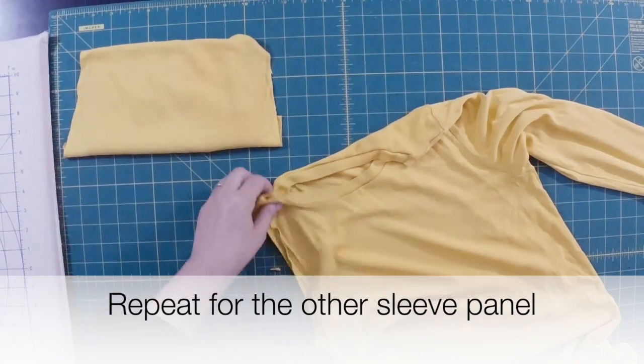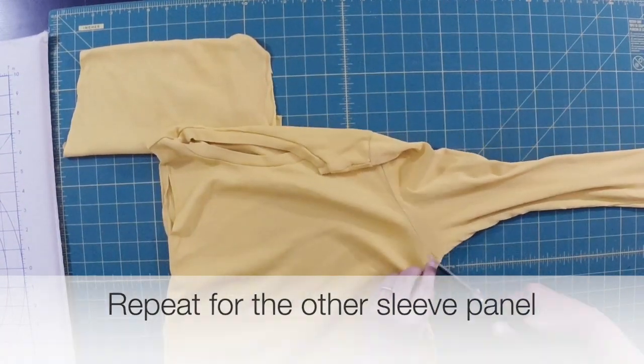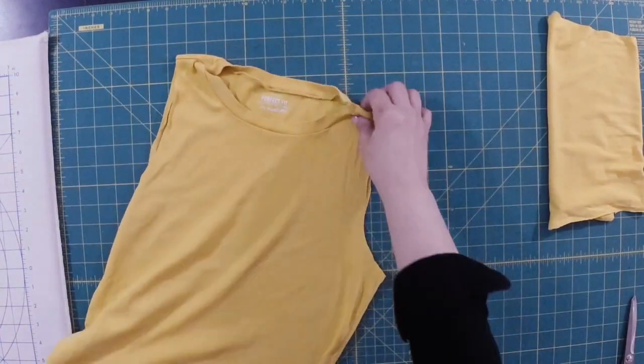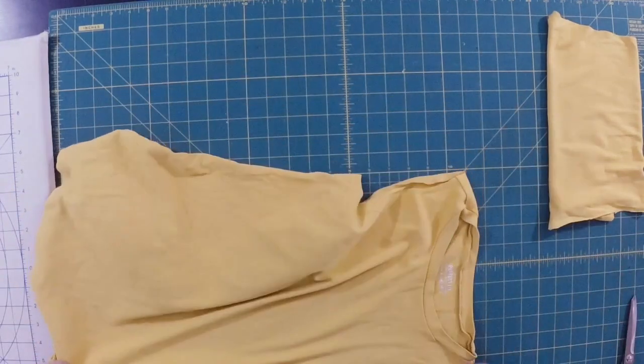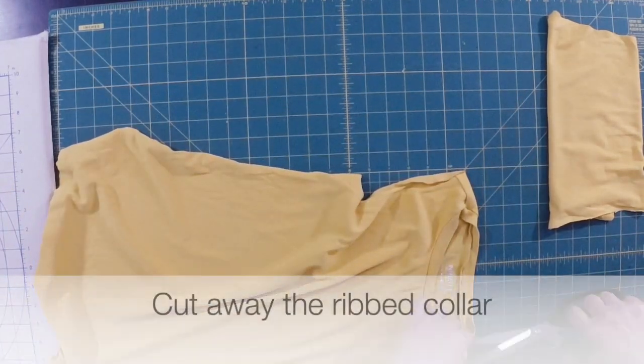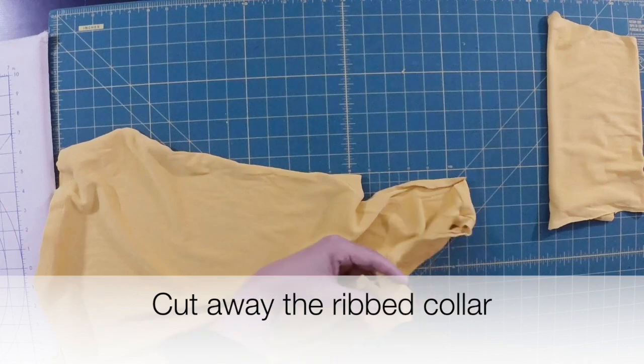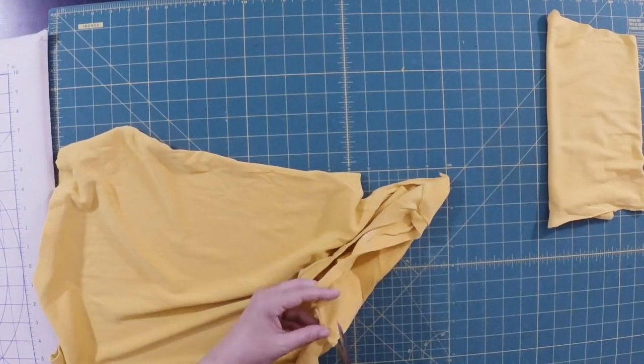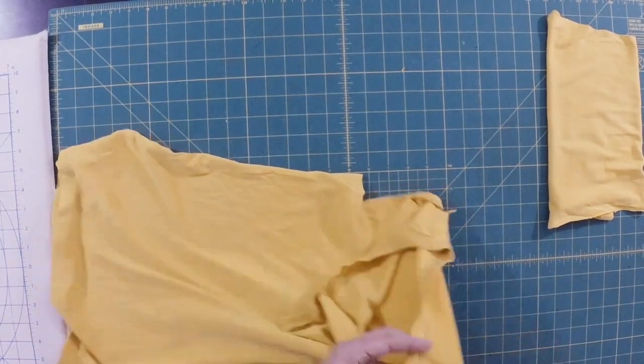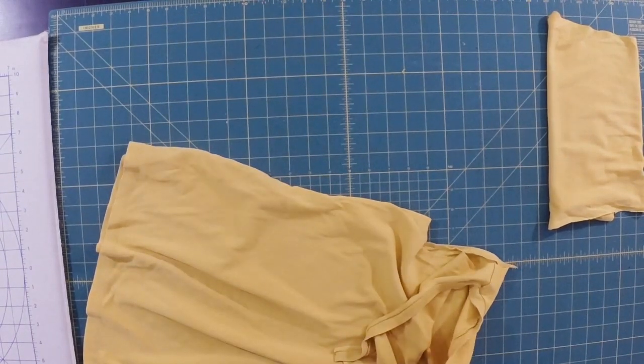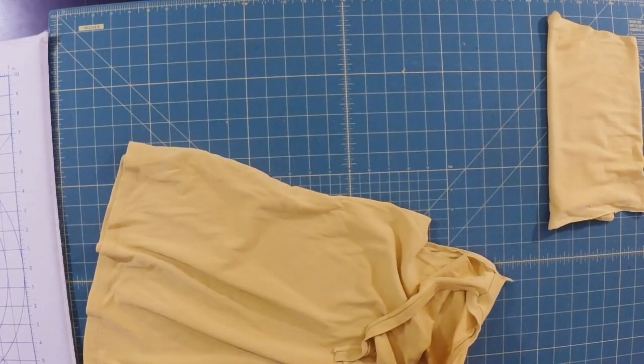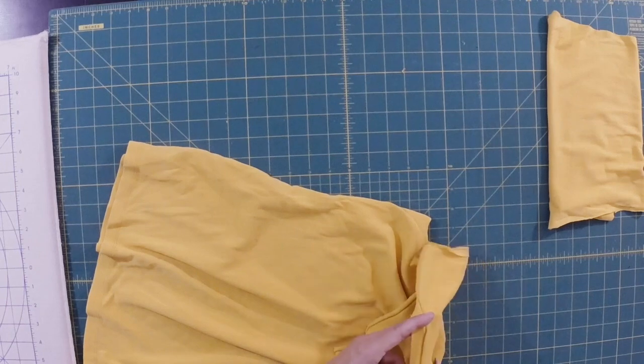You're going to do the same thing with the other sleeve panel. And you're left with the body. You're going to cut the rib collar off. And I just cut that off at the shoulder seam completely away from the body of the shirt and then just keep going right around the collar.